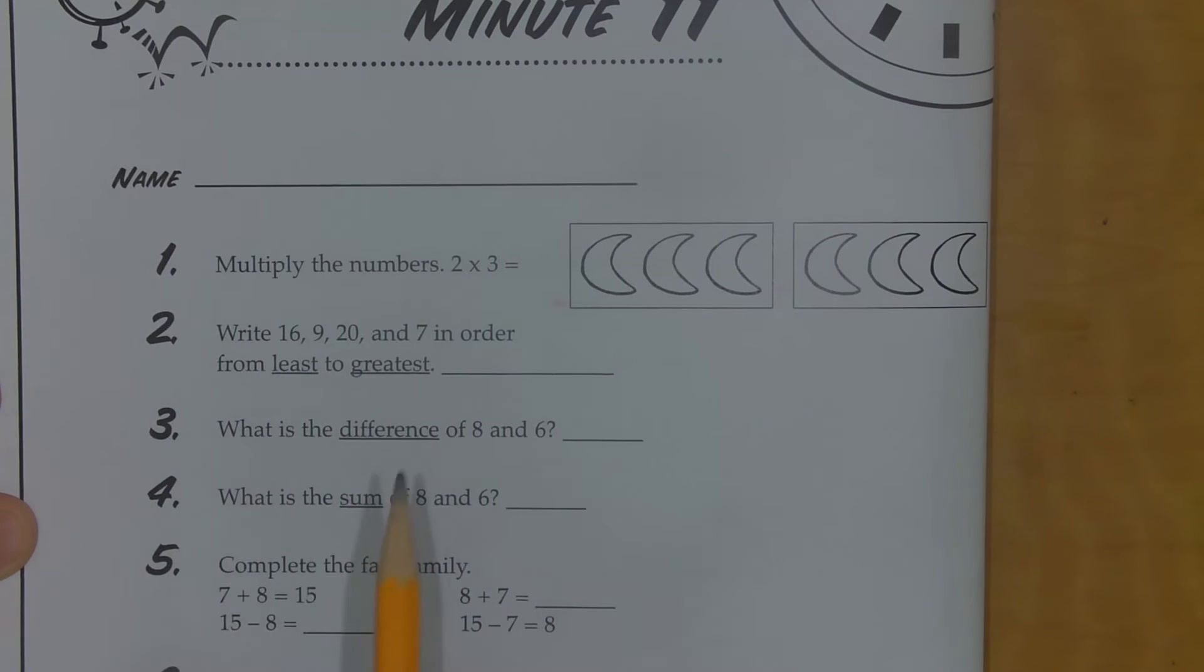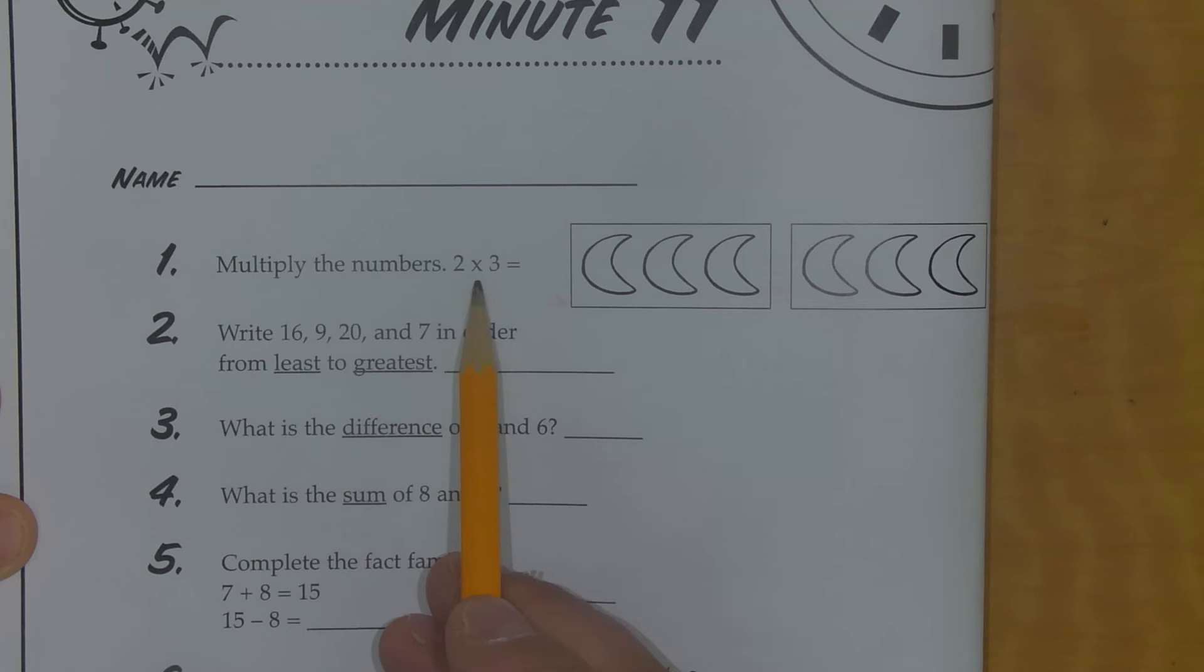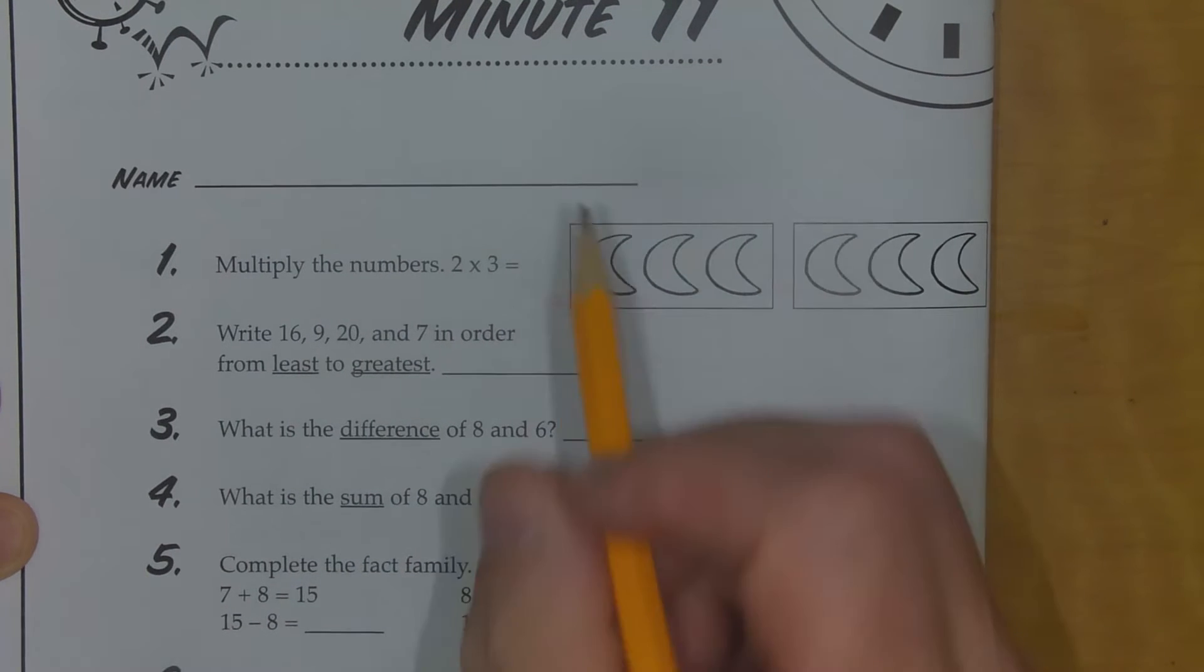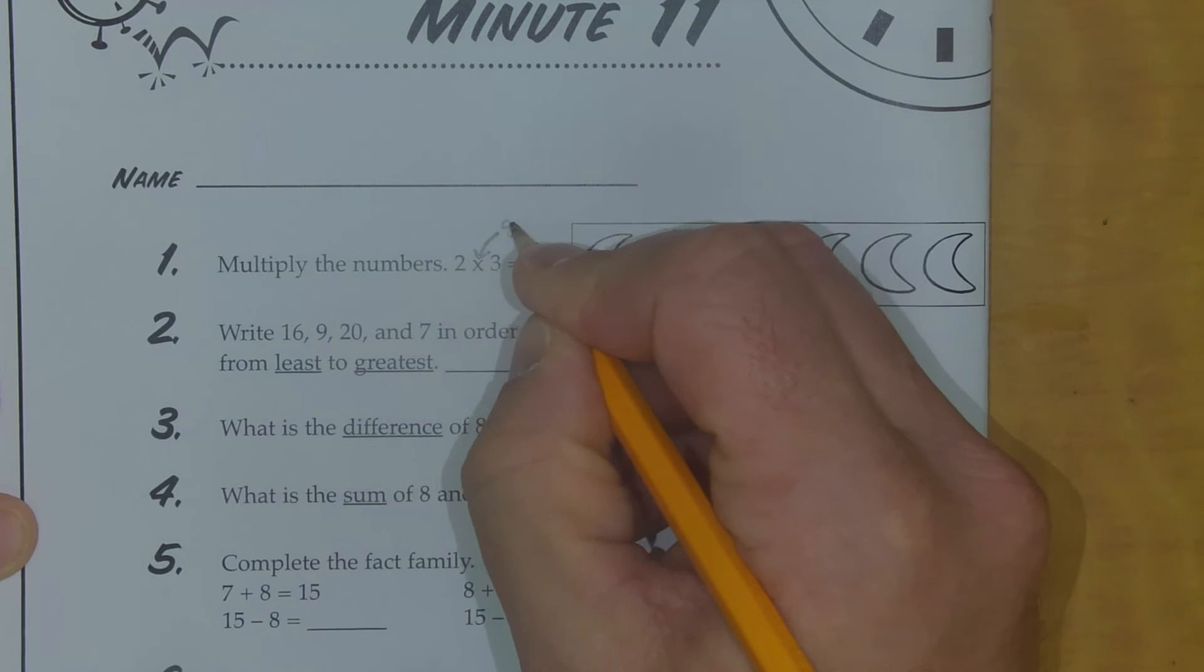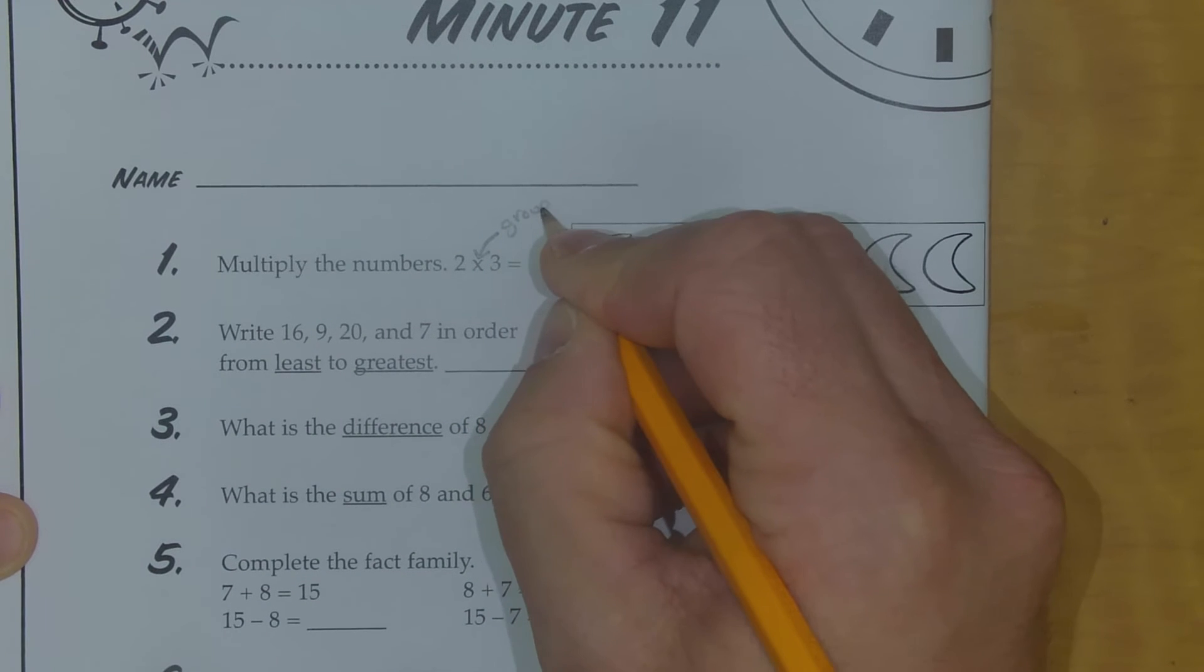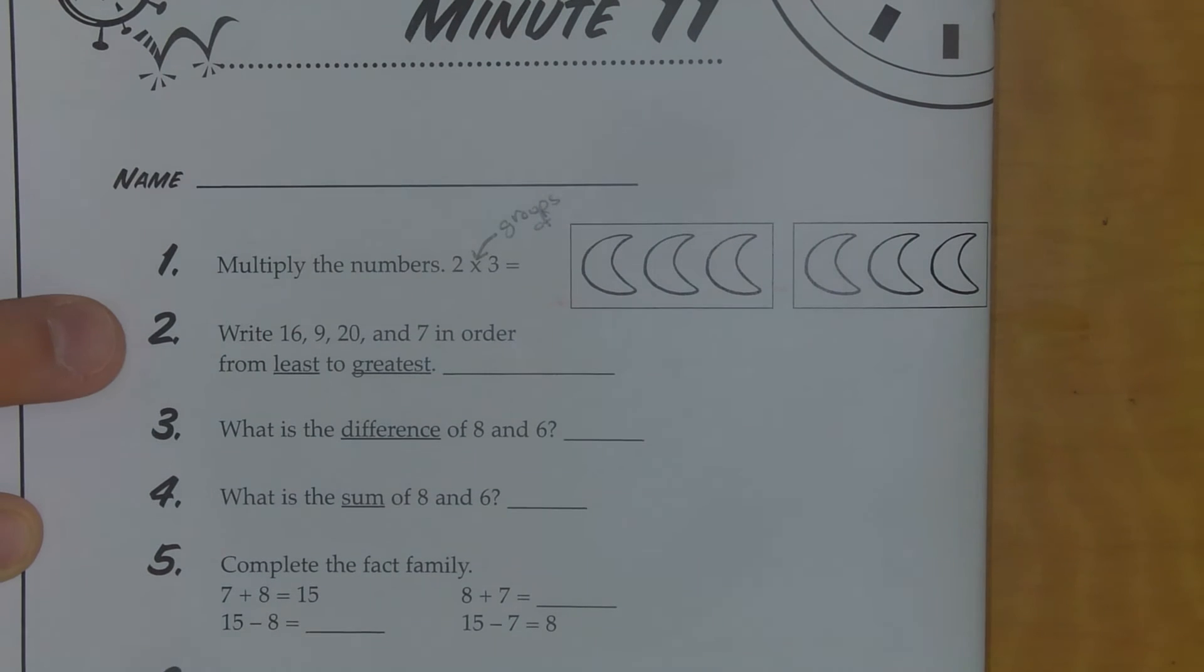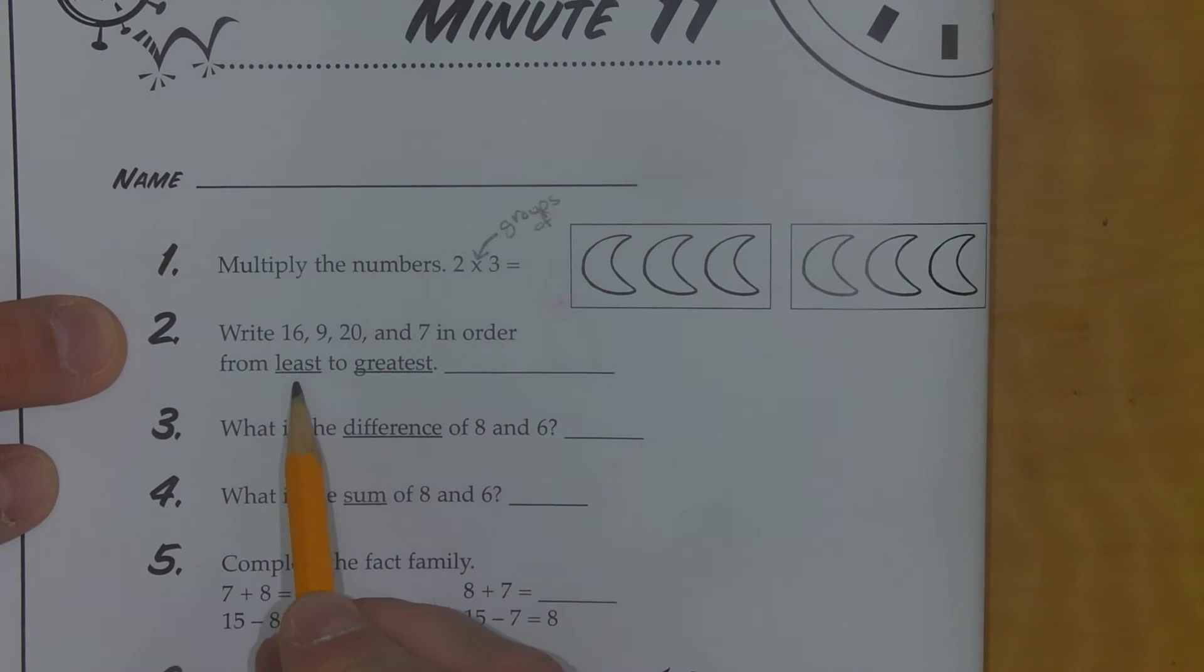So number 1 says multiply the numbers 2 times 3. They give you the crescent moons here. Remember this multiplication symbol means groups of. And you'll go ahead and solve number 1. Number 2: write 16, 9, 20, and 7 in order from least to greatest, or in this case smallest to biggest.